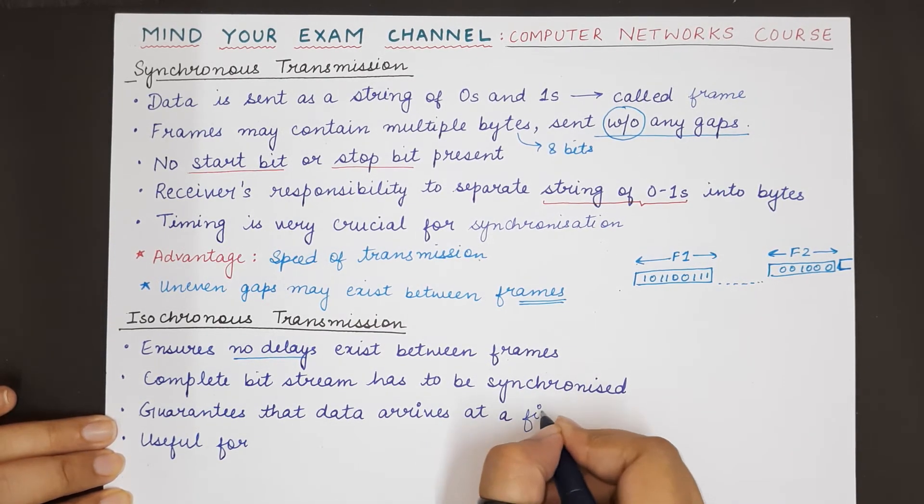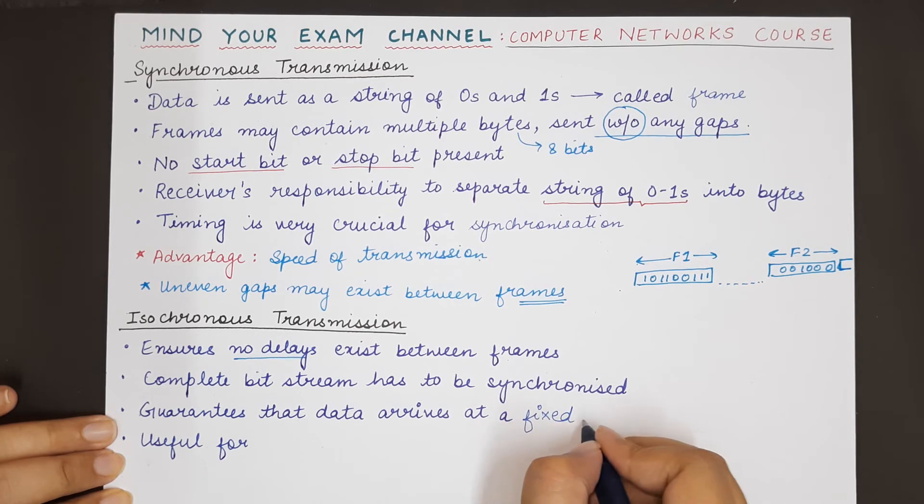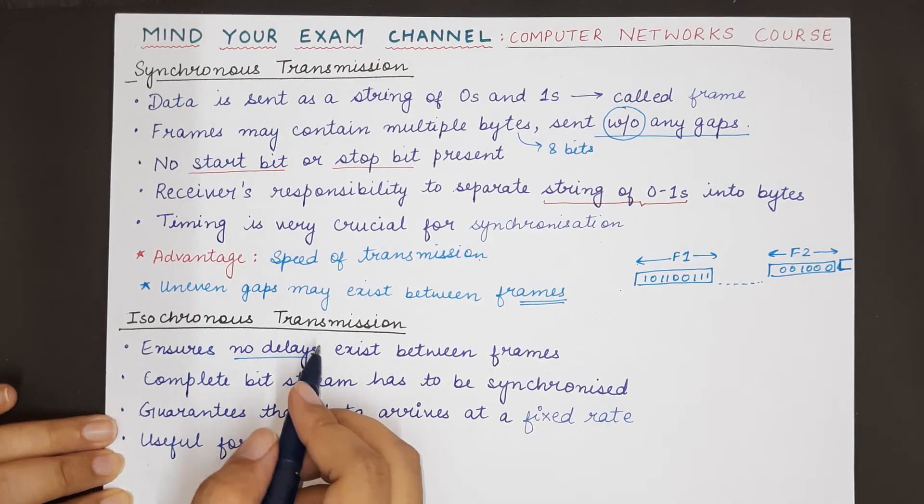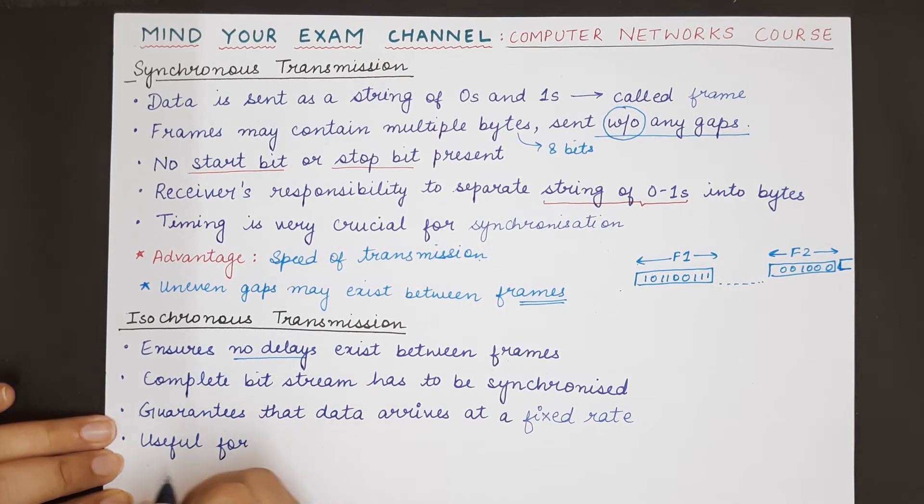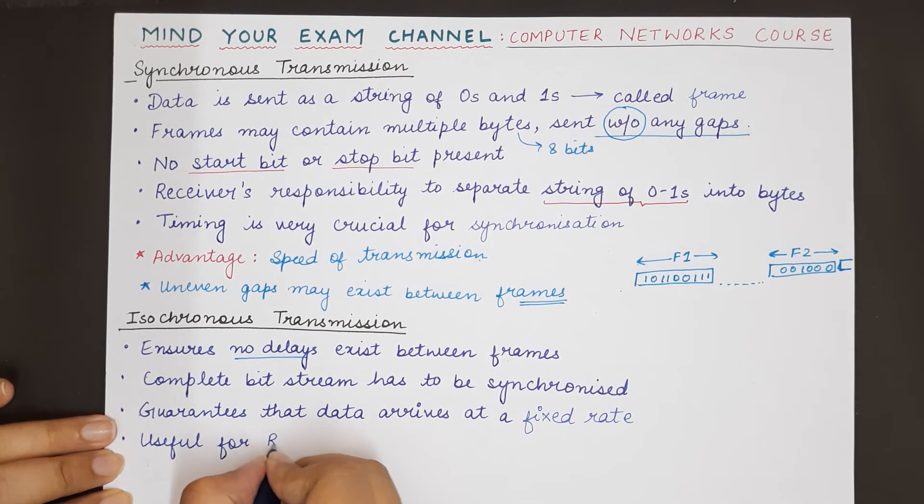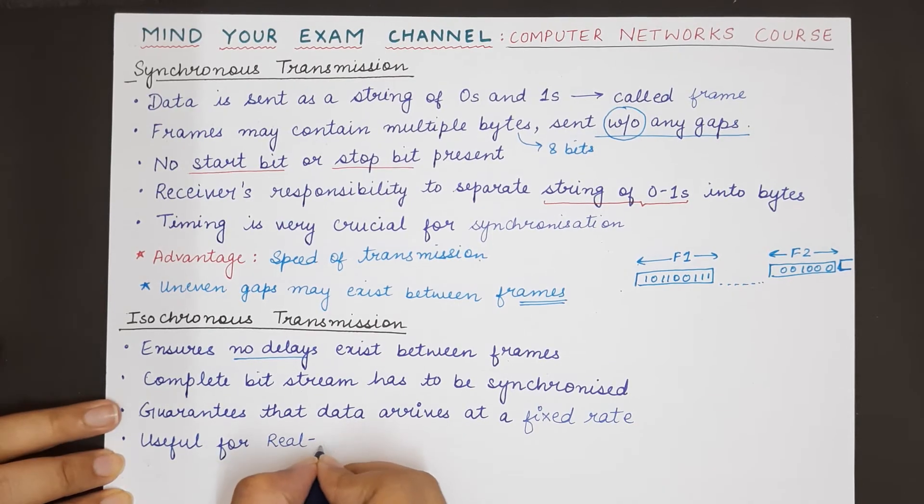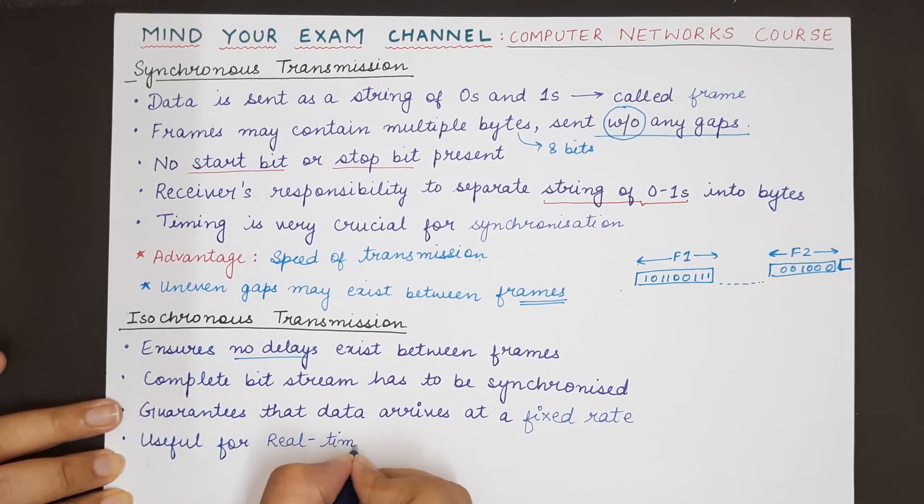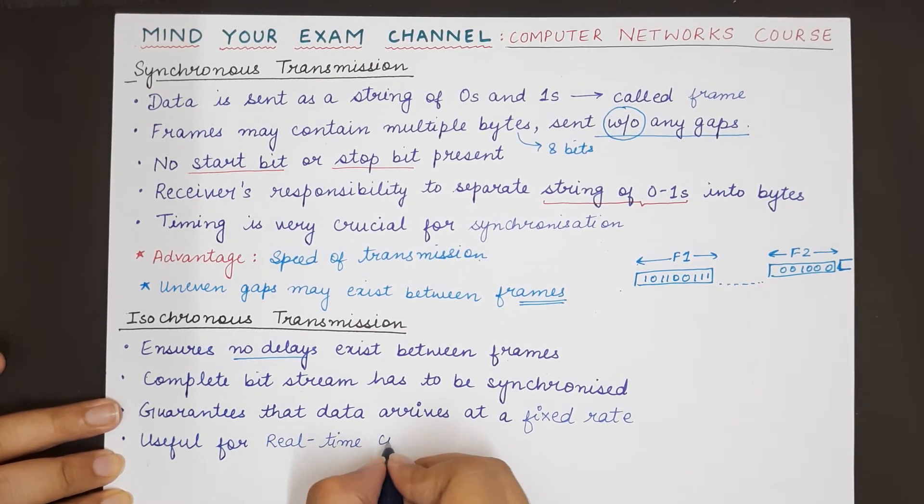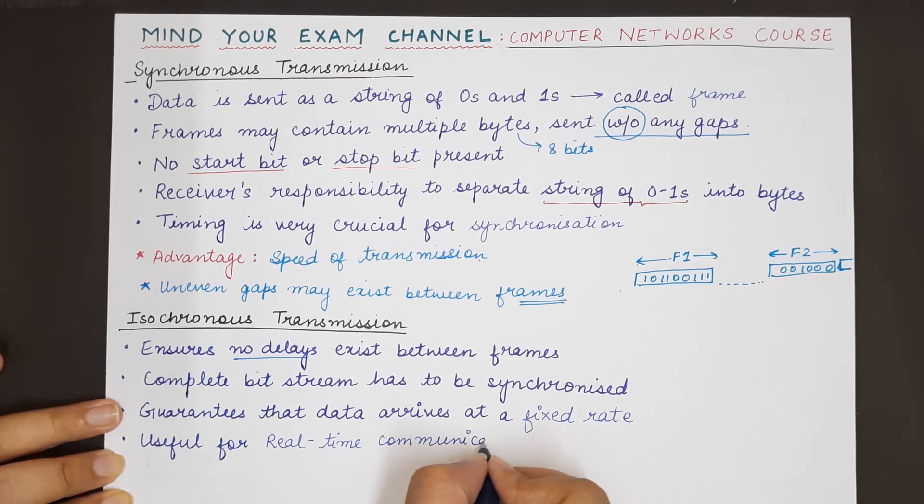There are no uneven gaps expected in isochronous transmission. Therefore, it is very useful for real-time communication. For example, if you are doing a video call, there will be no use of sending data with uneven time gaps.